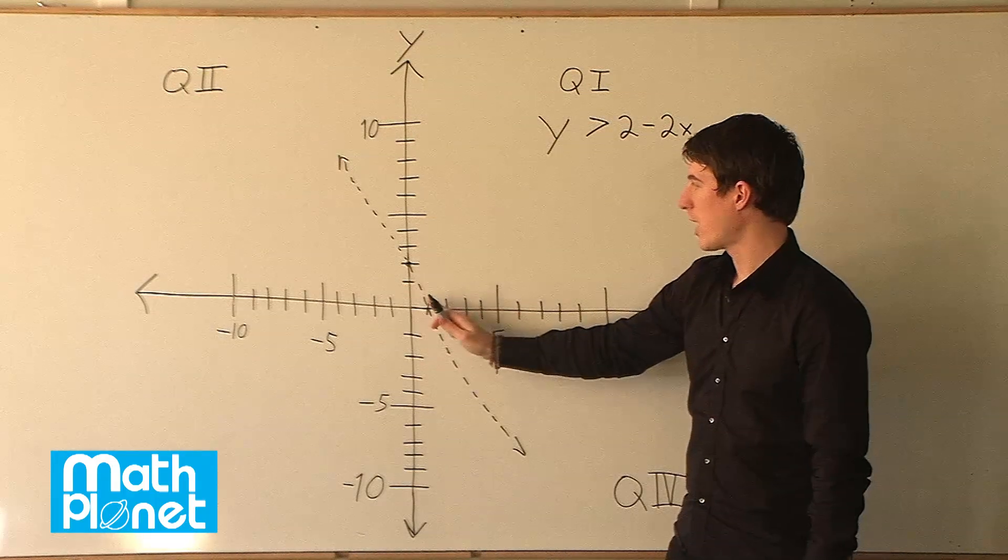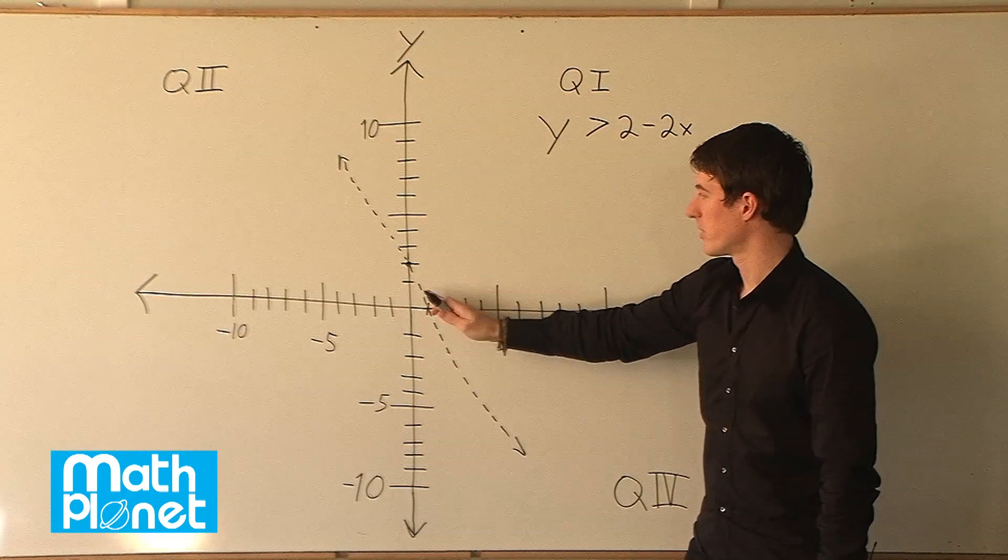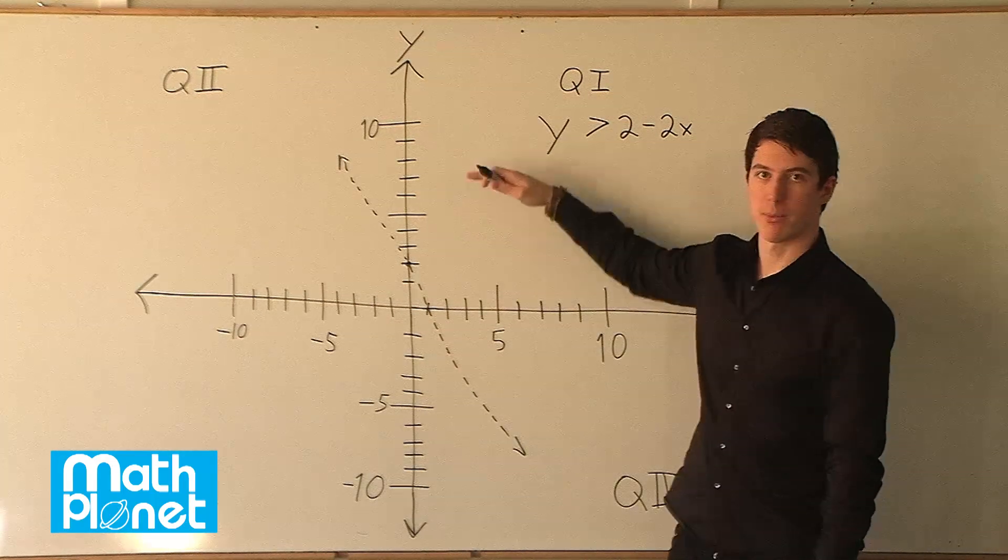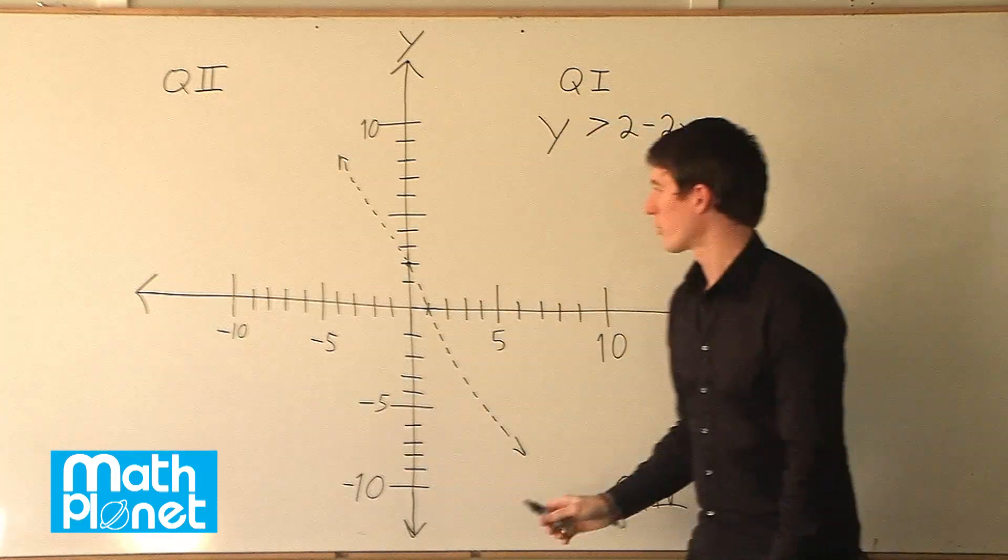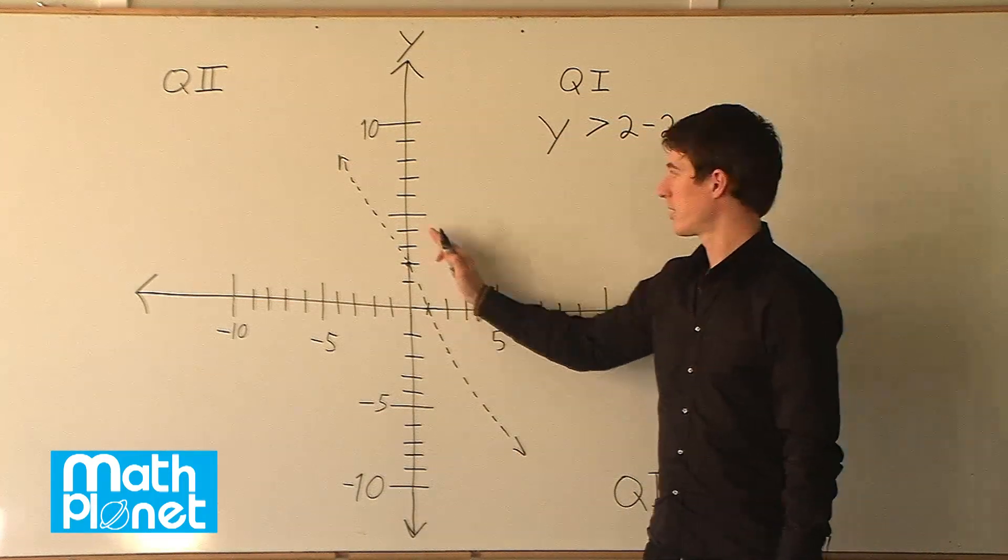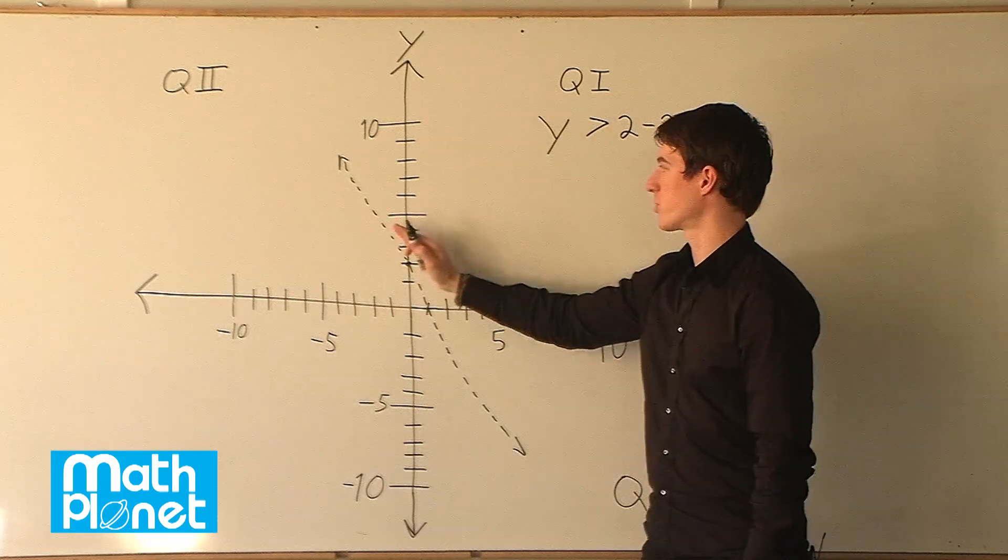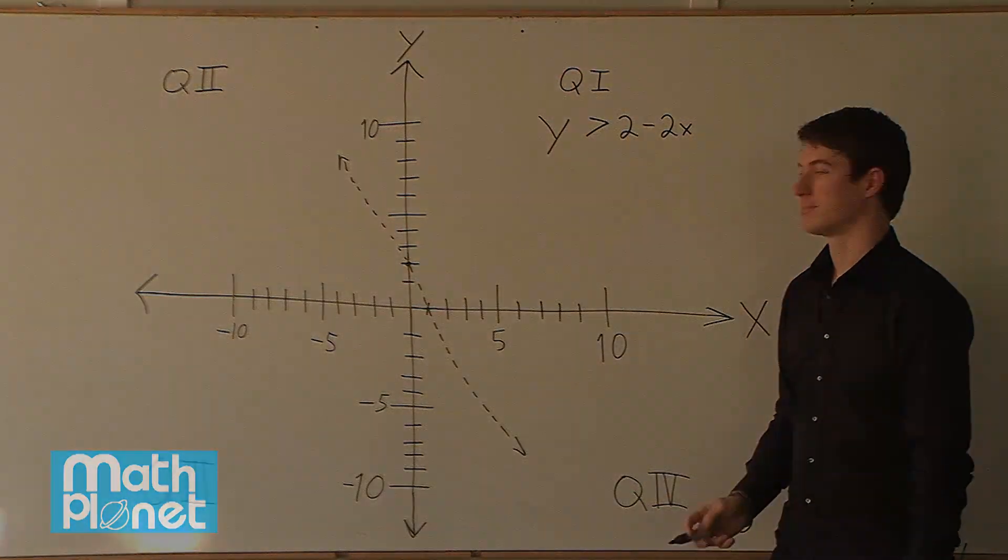So again, if it's y greater than something, then we say that it's greater than or up from this line. If it were y less than, we would be down here. So the answer is actually all of space greater than this line in this direction up here. And that's it.